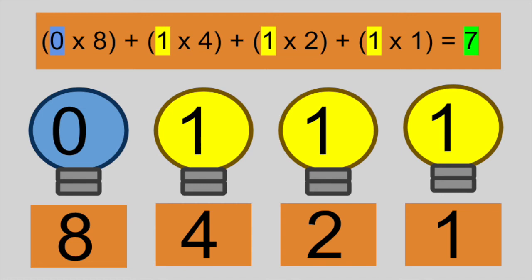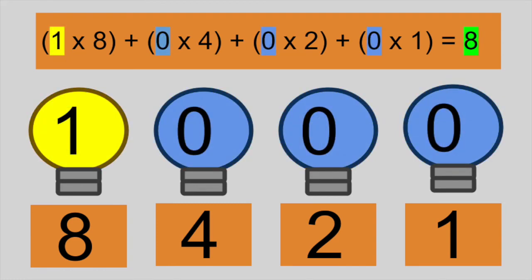You might be recognizing a pattern. To get the value 8, we turn on the fourth bulb only. This gives us 1 times 8 plus 0 times 4 plus 0 times 2 plus 0 times 1.